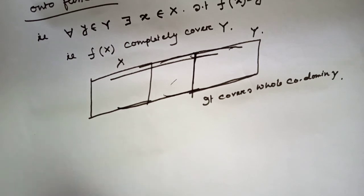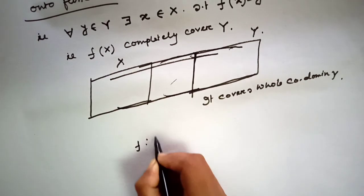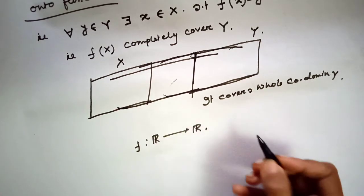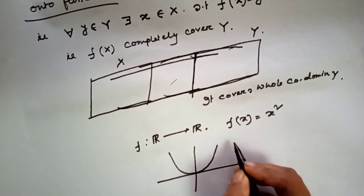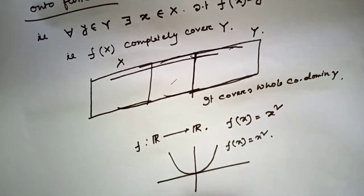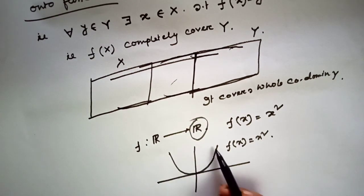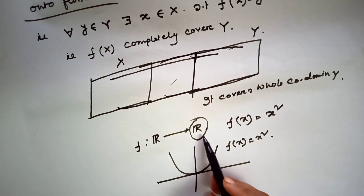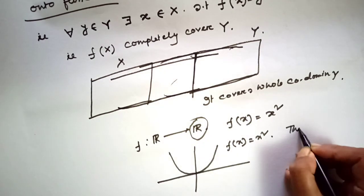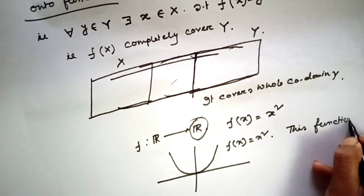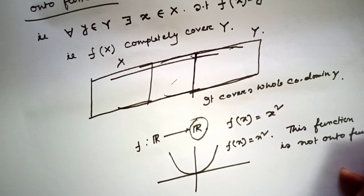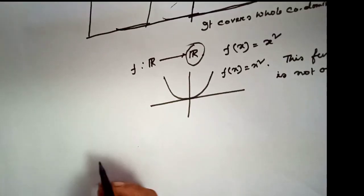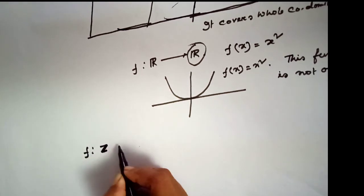Let's see an example. Let f from R to R with f(x) = x². Looking at the graph, the codomain is R, but the image set is only the non-negative real axis — the whole real line cannot be covered. So this function is not onto.